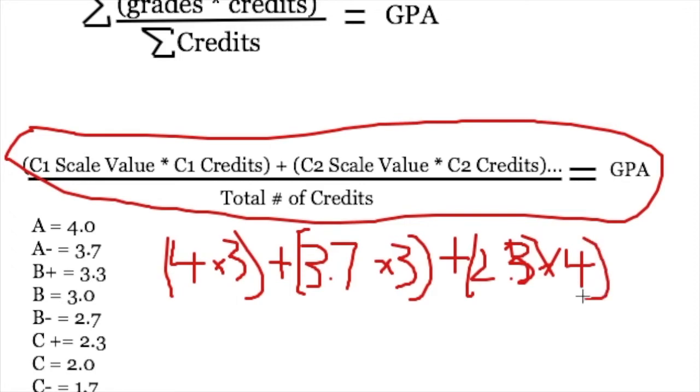And then so you would just keep going. So that would be three classes. Let's say that you have a fourth class, and let's say that that's something like English literature. Let's say you're good at that, so you get an A. So you put in here the grade scale value, which is a four. And let's say that that's a three credit class. And so we do that.